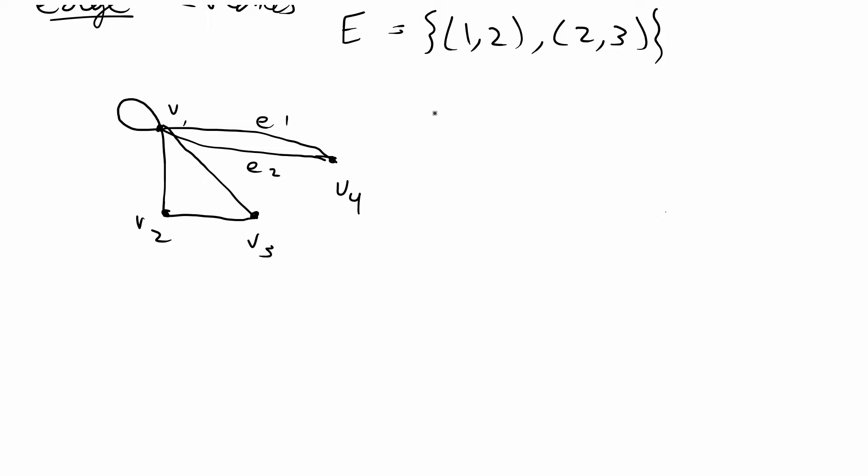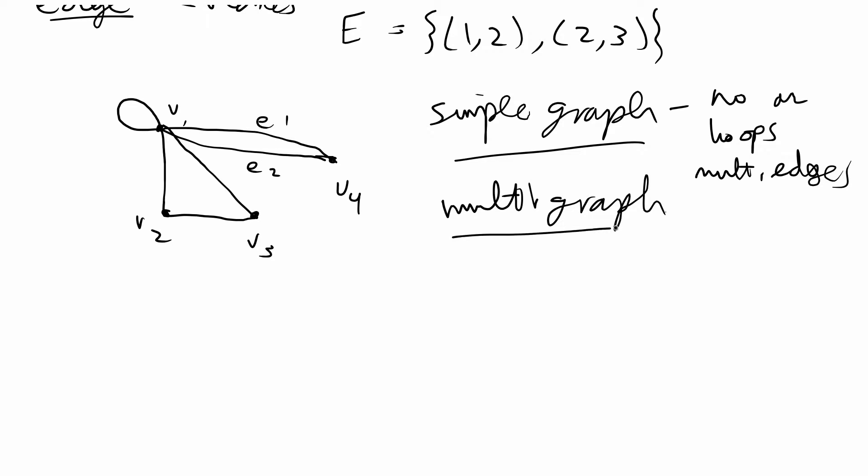And there are two main categories of graphs. There's something called a simple graph and then the opposite or something that's not a simple graph is a multigraph. So a simple graph is by definition a graph that has no loops and or multiple edges. And a multigraph is by definition a graph that has multiple edges or has loops.